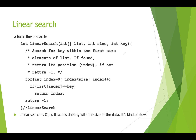If the item matches the key, we return that index because we've found the item. If we get through all of the slots in the array up to size and we haven't found the key, then we return negative one. So either we return an index where we found the item, or we return negative one, so we know whether or not we found the key.